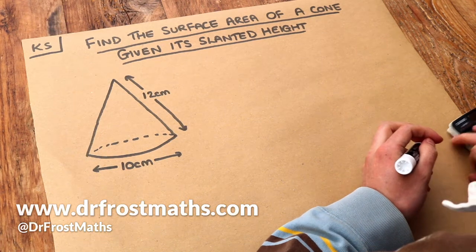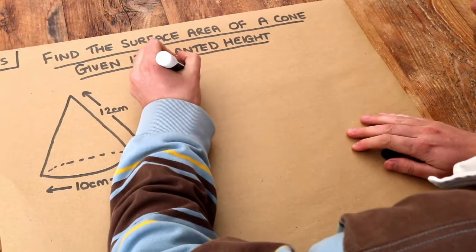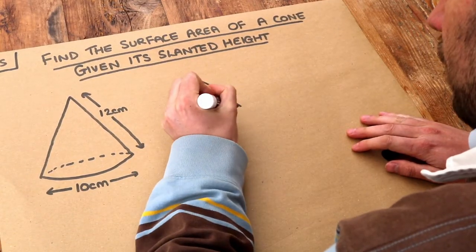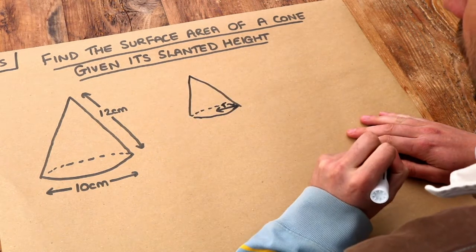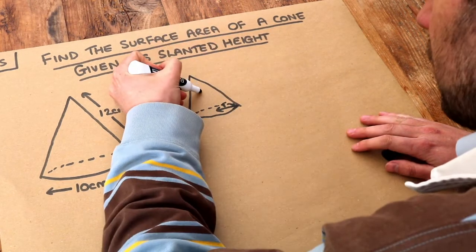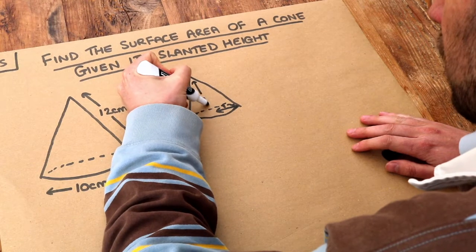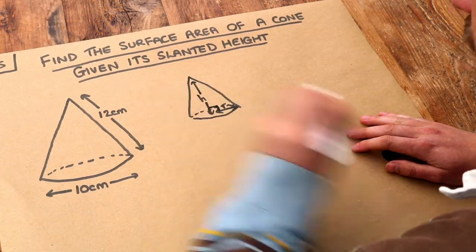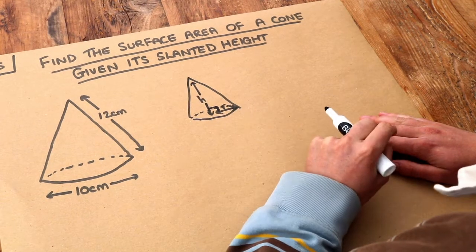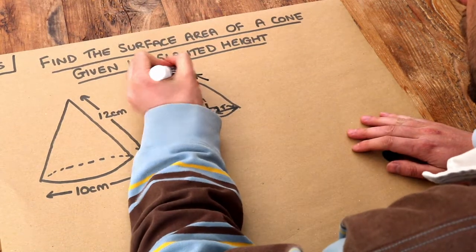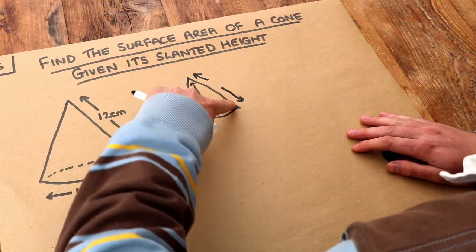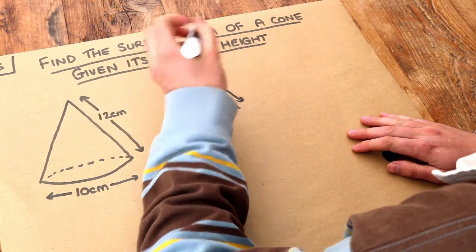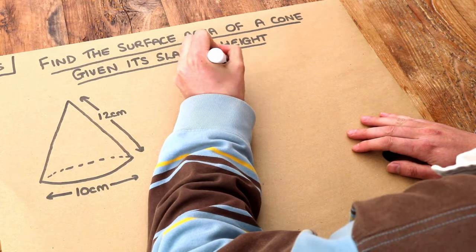What do I mean by the slanted height of a cone? If I have a cone, this is its radius here. The radius is the radius of the circle. The height going up like this is the perpendicular height because it's at right angles to the base. The slanted height is the length of this slant here, denoted by the variable l.